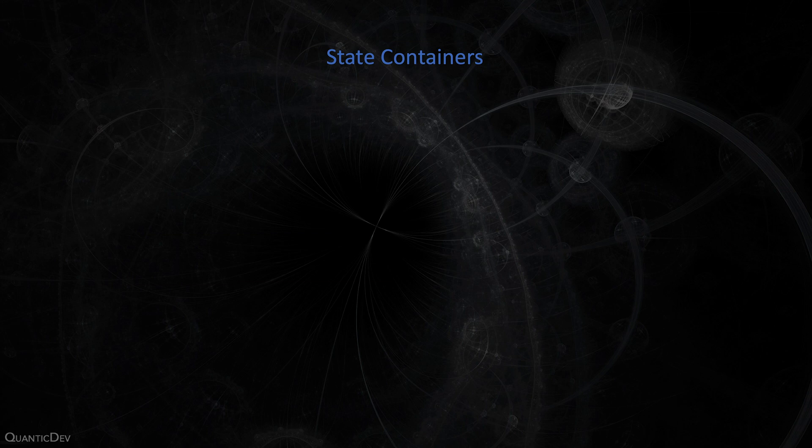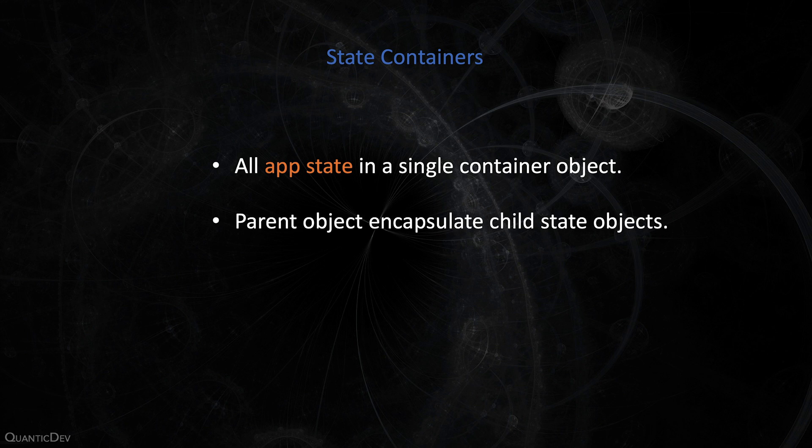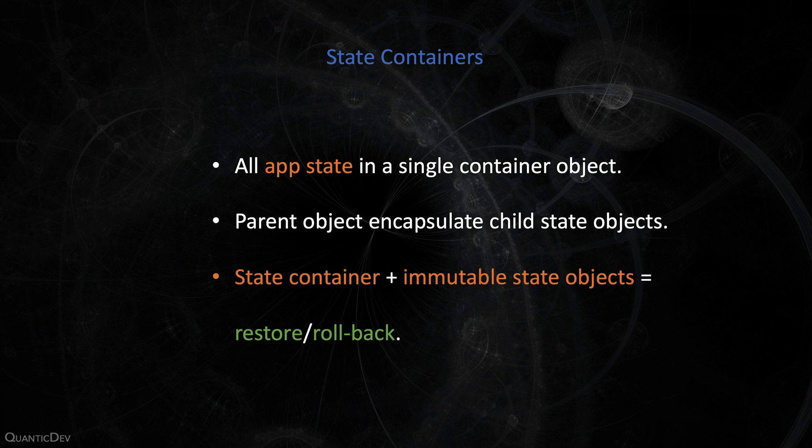12. State Containers. Instead of having your application state scattered throughout your app, you can collect all of it in a single state container object. This will enable you to look into a single parent object and observe the entire state of your app. Coupled with immutable state objects, you can easily save and restore the entire state of your app, or even roll it back in case of exceptional situations. There are great state container libraries and frameworks — they come bundled with pretty good documentation and guides, so check them out before using them.